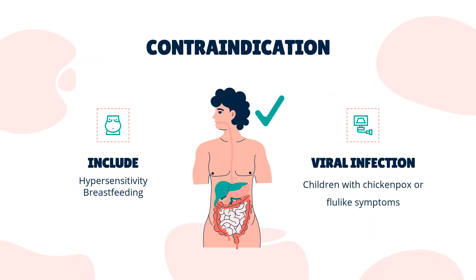Contraindications include hypersensitivity to mesalamine or salicylates, and breastfeeding. For rectal suspension, contraindications include hypersensitivity to salicylates, aminosalicylates, or to any ingredients in the suppository vehicle. It is also contraindicated in children with chickenpox or flu-like symptoms.